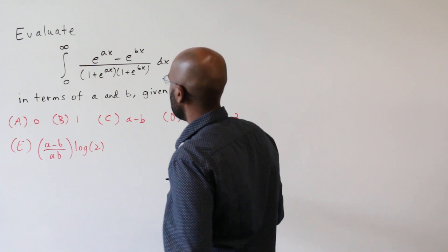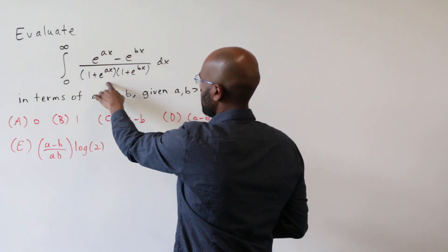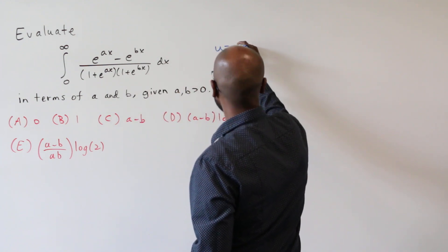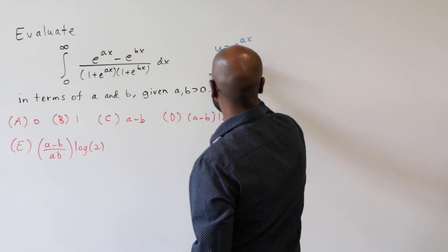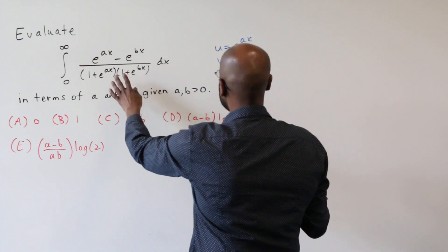What I'll do is notice we have terms that reappear, right? So e to the ax and e to the ax, e to the bx and e to the bx. So I'm going to make a substitution, not an integration substitution, but just a substitution of variables to get a sense of what this expression really is. So if I make u equal to e to the ax and v equal to e to the bx...